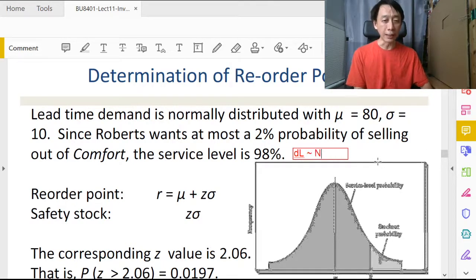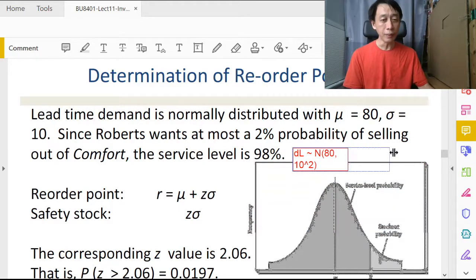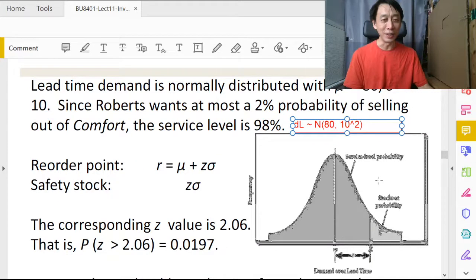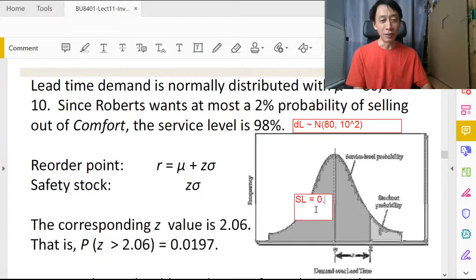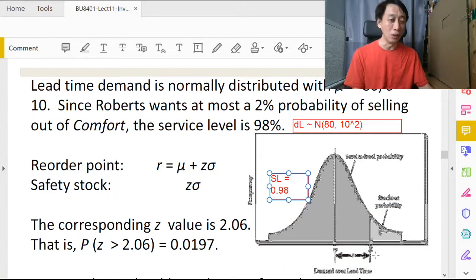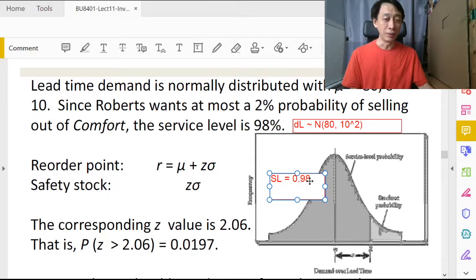This distribution diagram here is showing us essentially on the left side is the service level, and service level is always on the left side because demand falling below R is what defines as a service level, and therefore the right side will be our stockout level.